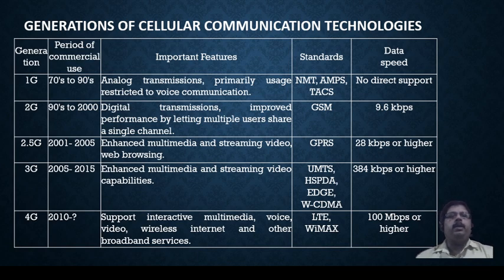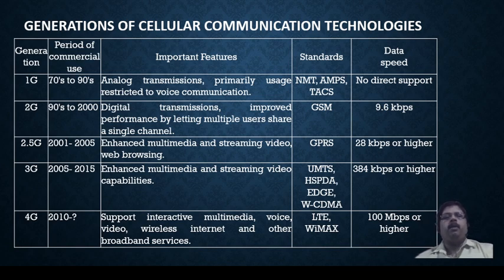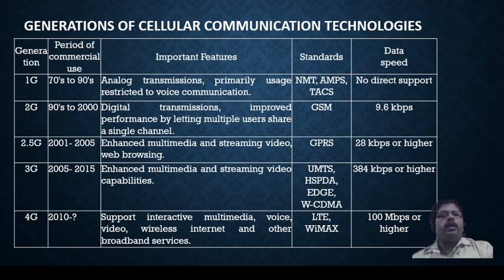After the 1990s, real digital transmission began with improved performance and multi-user signal sharing. This marked 2G technology, where voice communication was done over a data rate of 9.6 kbps — that was GSM. GSM was widely adopted when mobile phones first started, though nowadays we no longer use it.